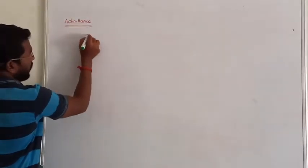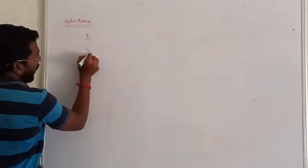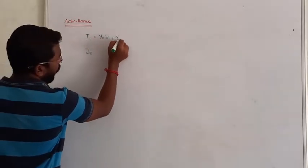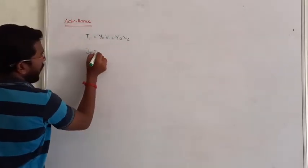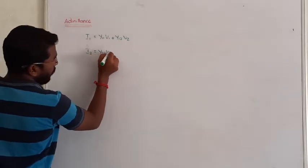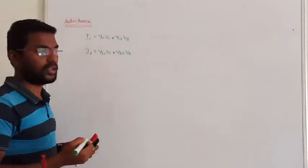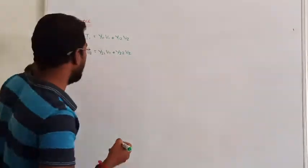Admittance parameter can be written as i1 = y11*v1 + y12*v2, similarly i2 = y21*v1 + y22*v2. That is the general representation. We can also write this same equation in matrix form.